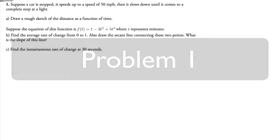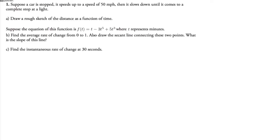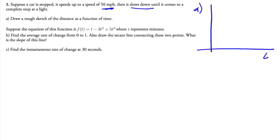We've got a car that starts off stopped and speeds up to 50 miles an hour. Then it slows down until it comes to a complete stop at a light. The first thing we want to do is draw a rough sketch of the distance as a function of time. So this is the time axis and this is the distance axis. If the car is stopped, it's going to start right here, speed up to 50 miles an hour, and then slow down.